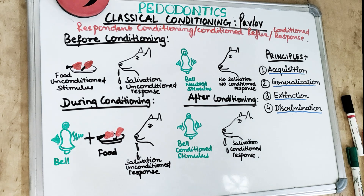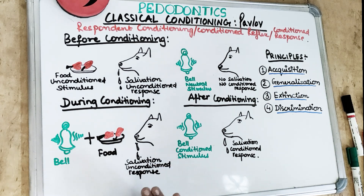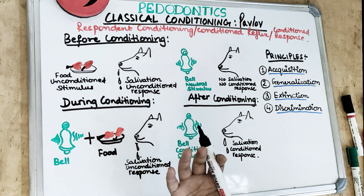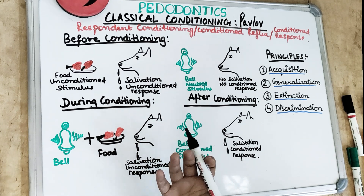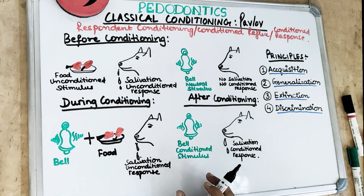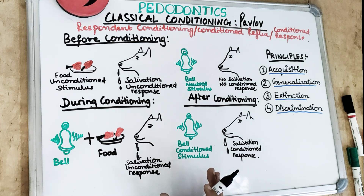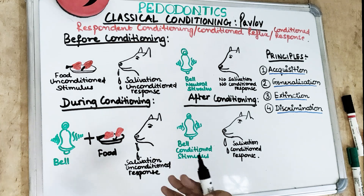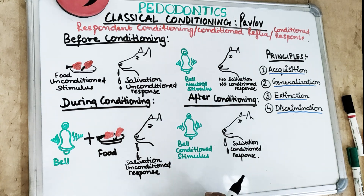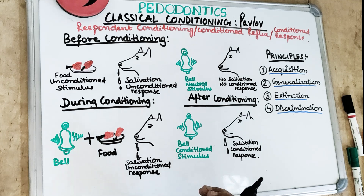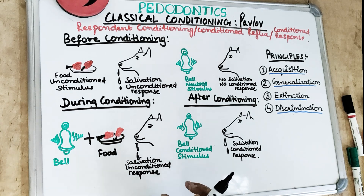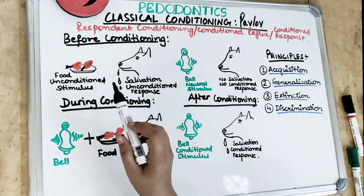Pavlov put a dog in a cell, providing all basic and necessary requirements, and put a bowl to measure the quantity of saliva. All activities were measured through an observational screen and a bell was attached to it. Naturally, we salivate when we see food. Now there are two things — a stimulus and a reflex. A stimulus is a thing that evokes a specific response or reaction, and response is the reaction or reflex. In this case, food is the stimulus and it initiates salivation, so salivation is the response to the stimulus.